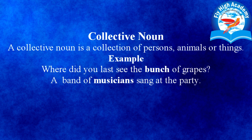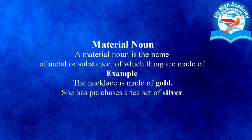Then material noun. A material noun is the name of a metal or substance of which things are made of. Material noun वो noun होता है जिसमें किसी metal or substance की बात की जाए। For example, 'The necklace is made of gold' — gold एक metal है, इसलिए वो material noun में आएगा। 'She has purchased a tea set of silver' — चांदी एक metal है, इसलिए हम उसको material noun बोलेंगे। Material noun में वो सारे पदार्थ आते हैं जो हमें जमीन से मिलते हैं।